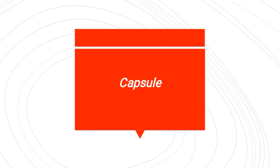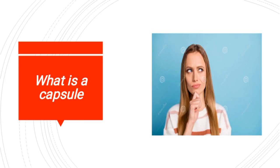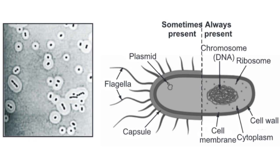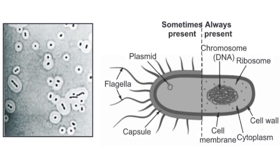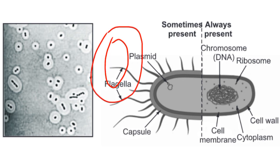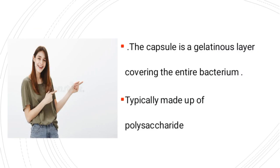After hearing the word capsule, the first question that will come in your mind will be: what is a capsule? As we already discussed in our previous lectures, bacteria contain two kinds of components — essential components that are present in all kinds of bacteria, and non-essential components that are present in some bacteria. The capsule is non-essential. This is a bacteria and it is covered by a gelatinous layer. This layer covers the entire bacteria and is called the capsule. Capsule is a gelatinous layer that covers the entire bacterium, and it is made up of polysaccharide, meaning the polymer of sugar. This sugar component varies from one species of bacteria to another.